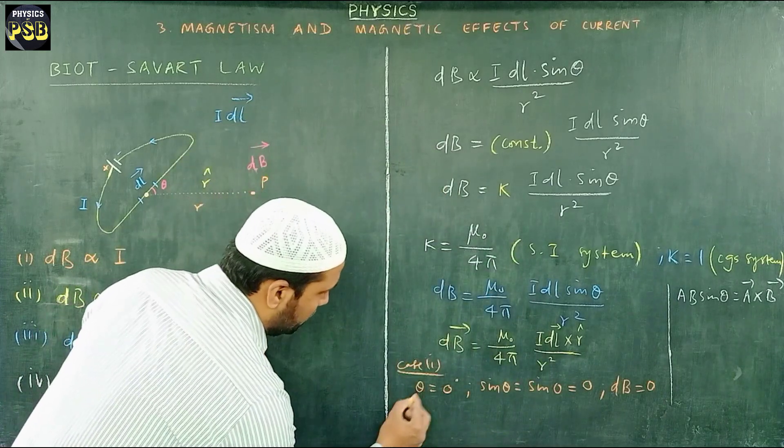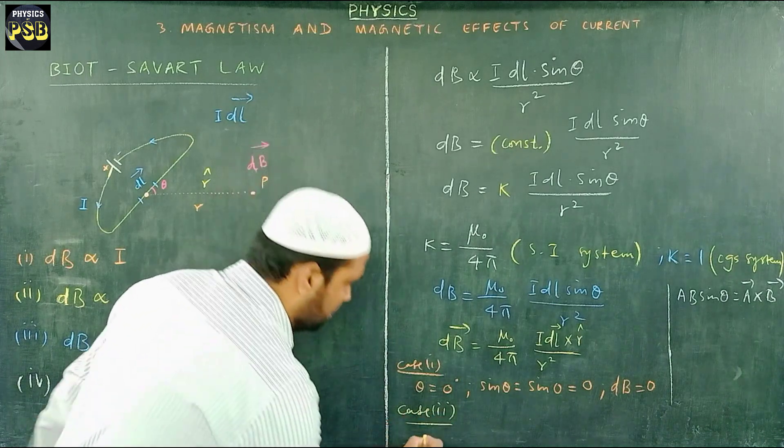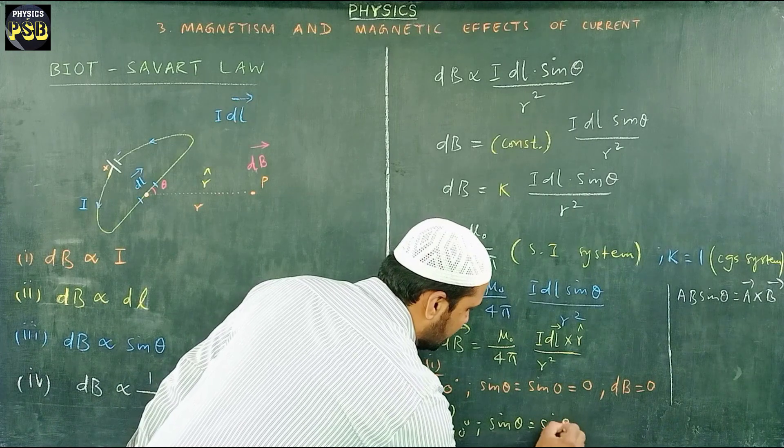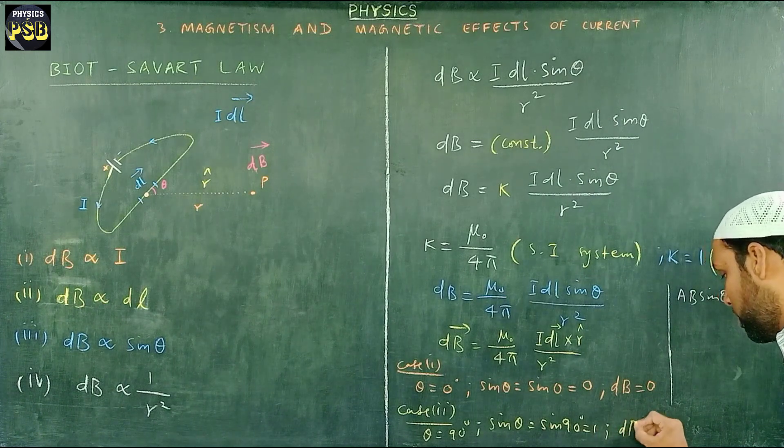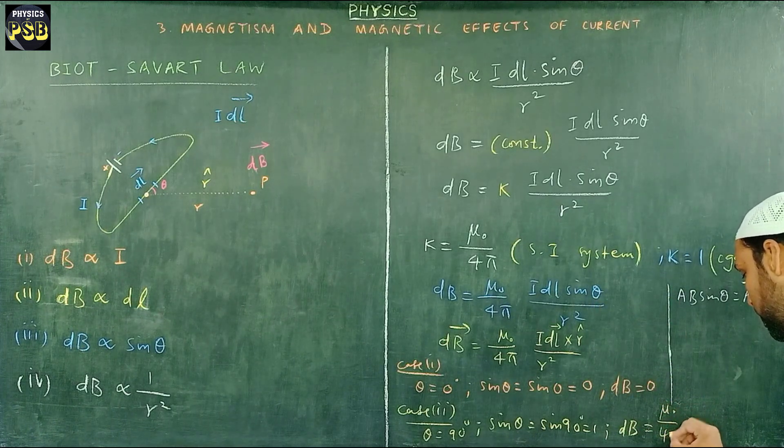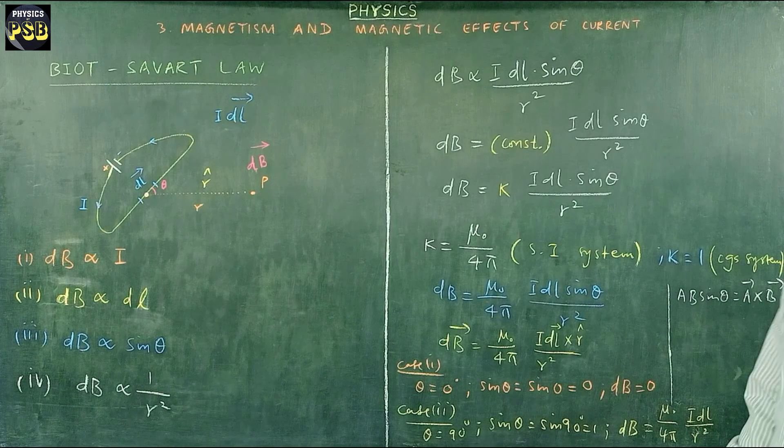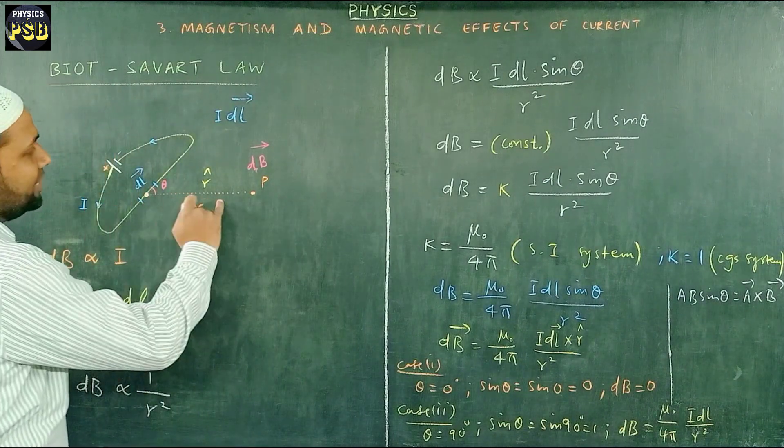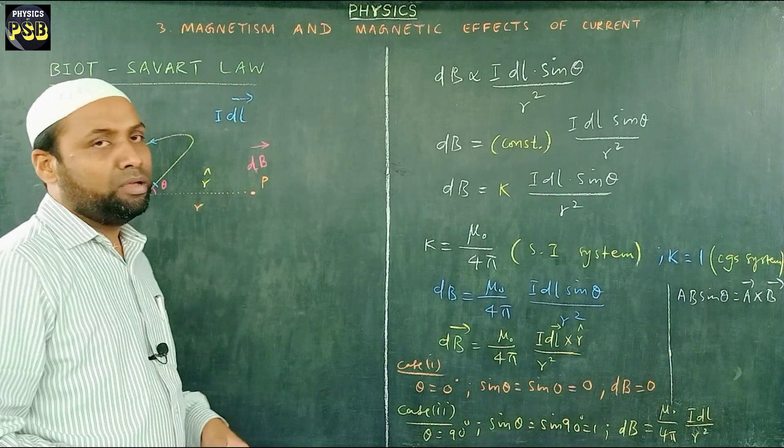Next, let's find out what happens when the angle theta is taken as 90 degrees. If theta equals 90 degrees then sine theta becomes sine 90 which is equal to 1. So for this case magnetic field is equal to μ₀ upon 4π I dl upon r square. This is the maximum value of magnetic field when the angle between current element and the line that joins current element to the point P is at 90 degrees. The magnetic field at point P becomes maximum.